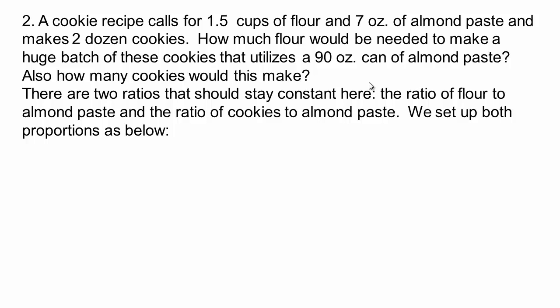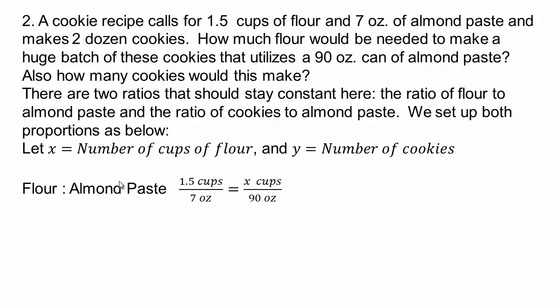Let x be the number of cups of flour, and let y represent number of cookies. So flour to almond paste ratio was one and a half cups of flour to seven ounces of almond paste. Now we want to use 90 ounces of almond paste, and we want to know how many cups of flour. So again, you can cross multiply if you want, or since you only want to solve for x, we just want to get rid of 90. To get rid of it, you would have to undo division, which is multiply both sides by 90. And then you'll get 19.3 cups of flour.